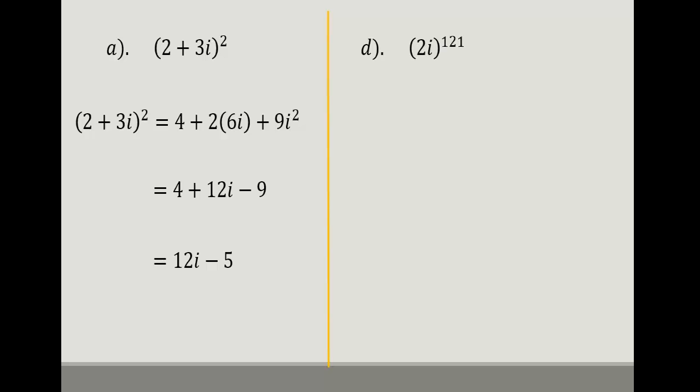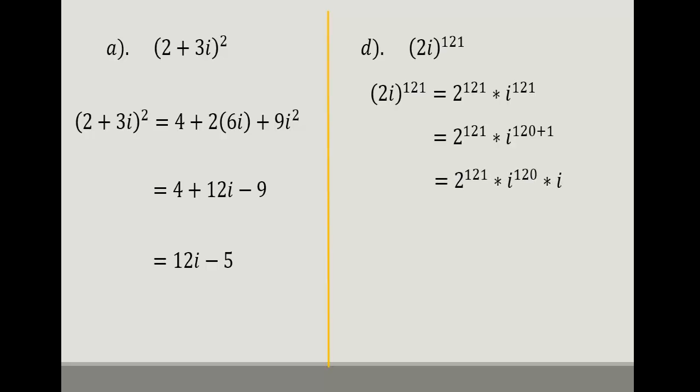For Part D, we are given (2i) all to the power 121. We solve this by first distributing the power to the expression in the bracket using indices, splitting it as 2^121 times i^121. We then want to get rid of the high power on i, so we use indices to split the power of i as i^120 times i^1. From indices, we can further split i^120.